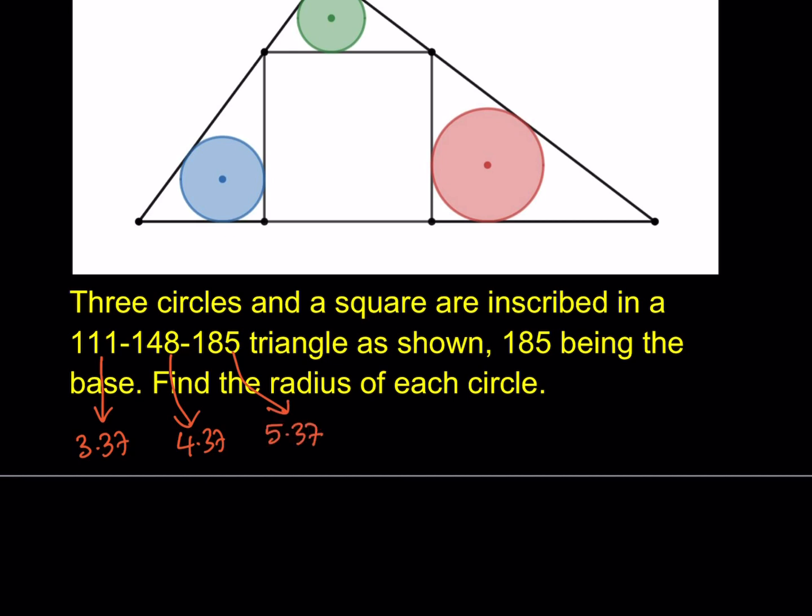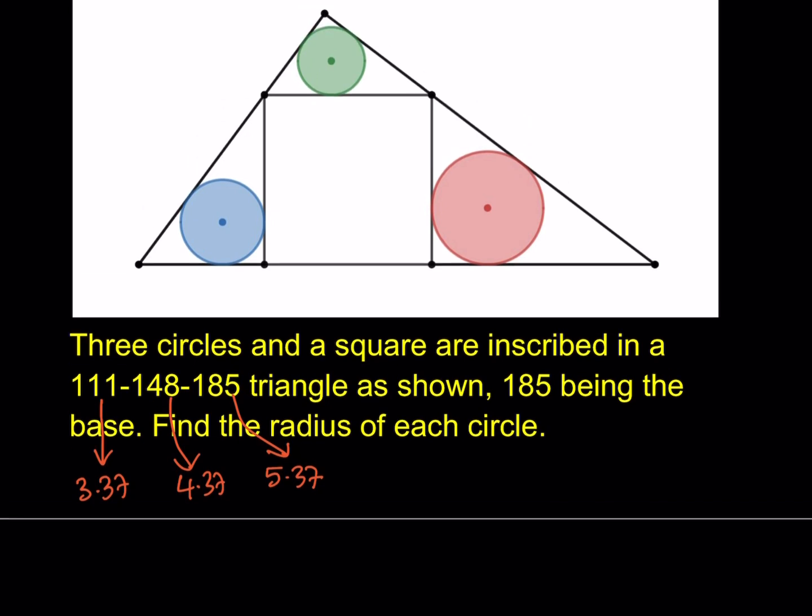Great. So this is basically like a 3, 4, 5 triangle, but just expanded. So that means we have a right triangle, and the figure is drawn to scale, so I can just go ahead and mark it as a right angle there. And the base is 185, which is the longest side, which is the hypotenuse. So this is our basically 3, 4, 5 triangle. And we're just going to find the radius of each circle.